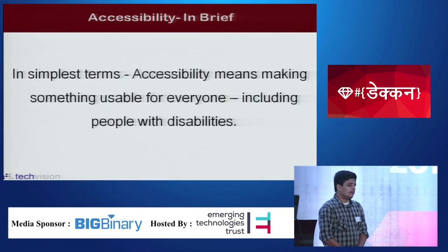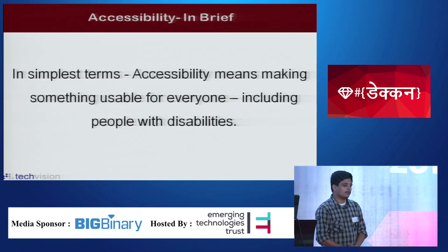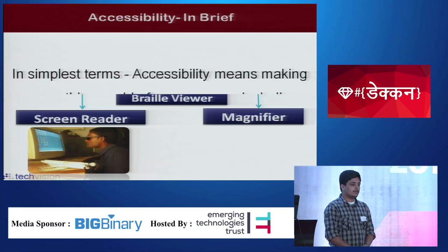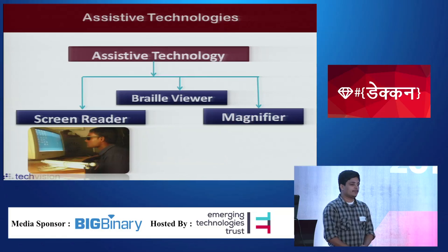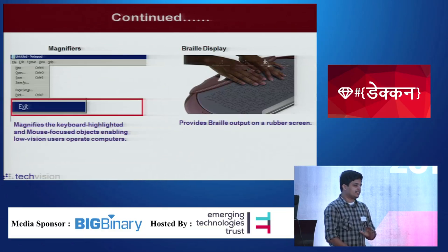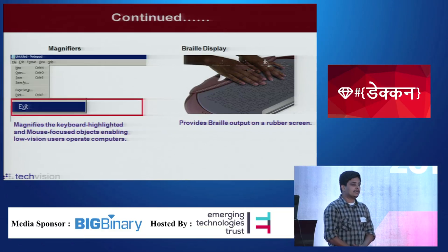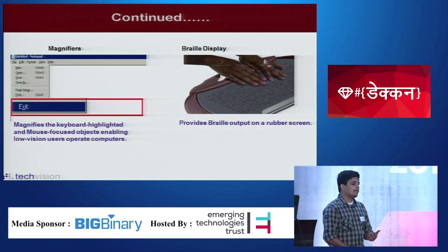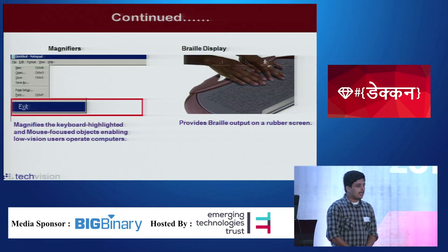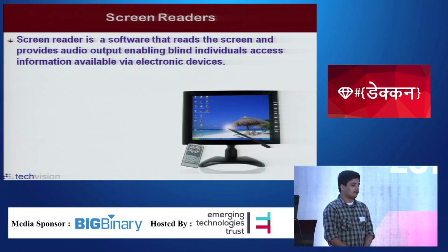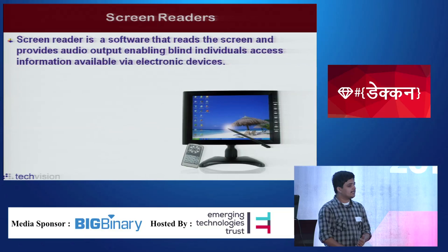Accessibility, in simplest terms, is to make something usable to everyone regardless of disability. Web accessibility is to make web content usable to everyone. To access the computer and web content, persons with disabilities use different assistive technologies. For visually impaired and low vision users, different assistive technologies include screen magnifiers, which magnify the computer screen. Another one is the Braille viewer, which outputs computer screen content in Braille format, allowing blind users to use the computer. Another one is the screen reader — the most popular assistive technology used by low vision and blind users. A screen reader user is also essentially a keyboard user.